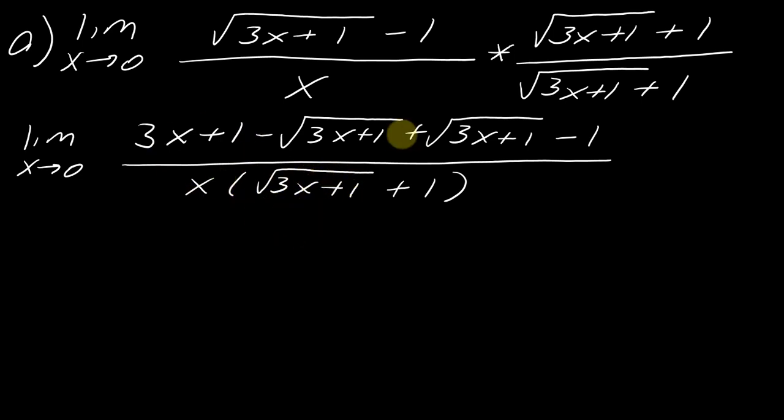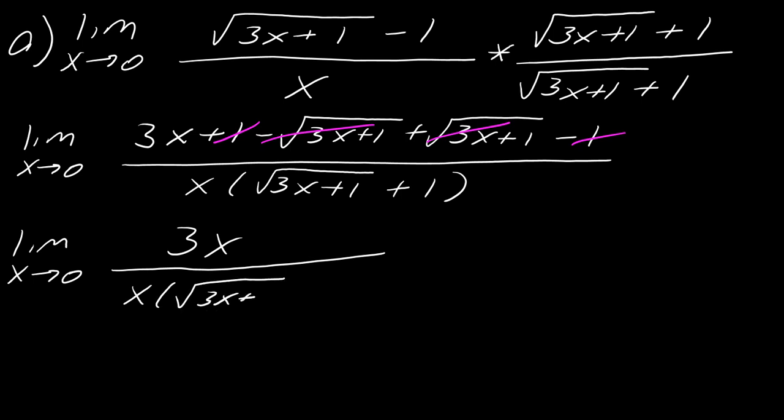The reason why you want to leave this alone and not multiply it together is very often what will happen as you're working through this you will find that something actually cancels out with the bottom. So if it doesn't, then you might want to work out the bottom, but this is just like a good best practice. You can see then just by looking at this, my square roots here are gonna drop out, my ones drop out, so now I'm just left with the limit as x approaches 0 of 3x over x times the square root of 3x plus 1 plus 1. And so now you can see the x's will drop out like that.